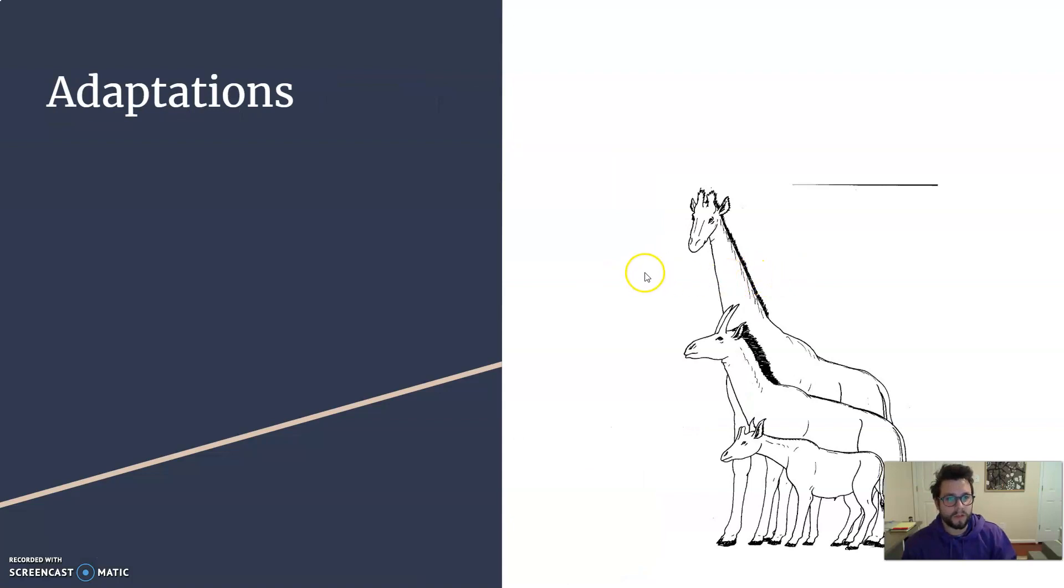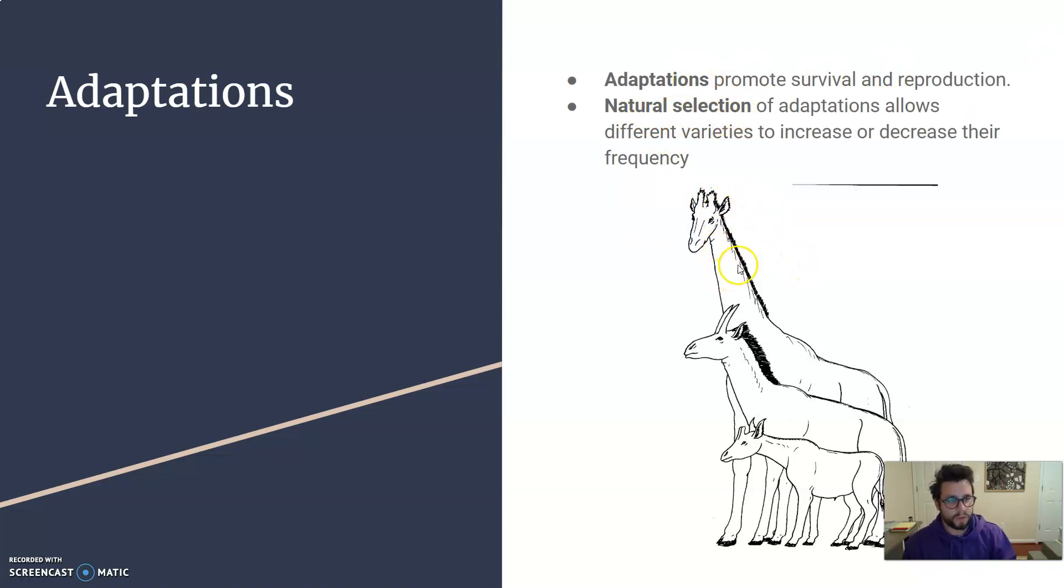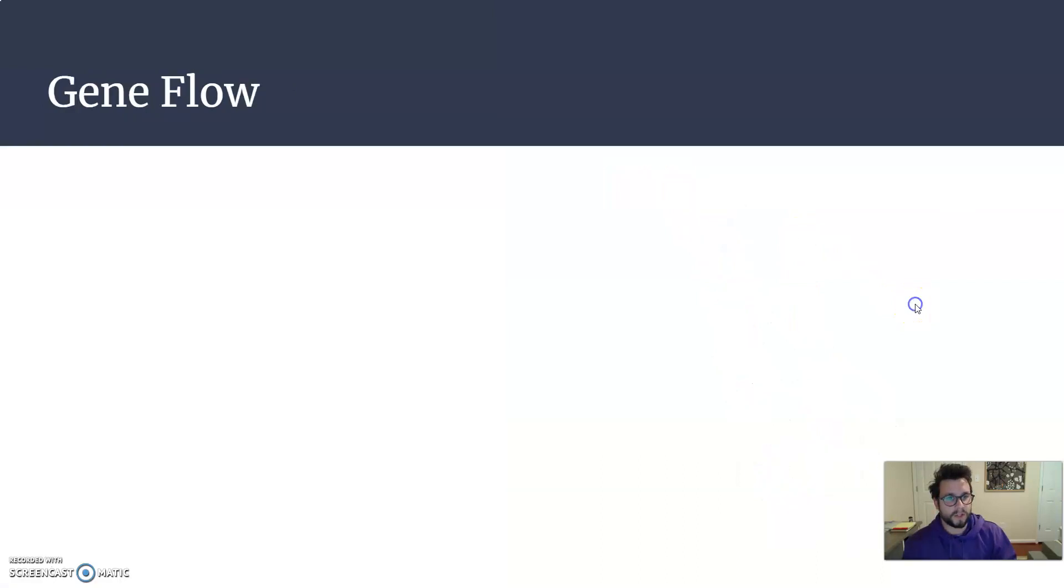So that first one we looked at was adaptations. They promote survival and reproduction, and through natural selection, some of them will survive, some of them won't. And the amount that survive will have more of the adaptations that are helpful to this organism. So over time we would expect a change in the population.